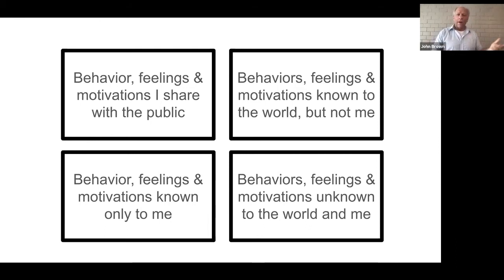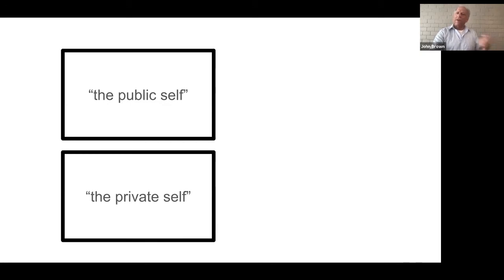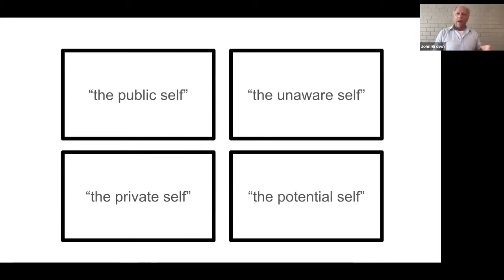The Johari model is often called the Johari window. To phrase it a little differently, using the words of Dr. Luft: the stuff you present to the world and share with everybody is your public self. The stuff you keep private, putting a facade between you and the world, is your private self. The unaware self is the one that others can see but you can't see yourself. And then the potential self — your potential — is all of the stuff that you don't know even exists, and the person you're in relation with also doesn't know it exists.